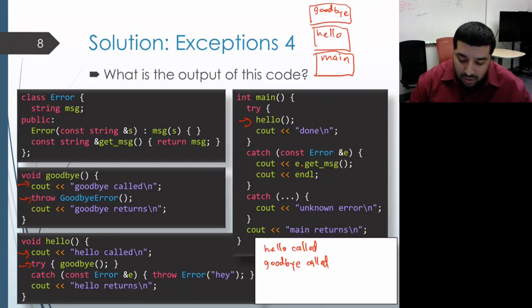So first it checks the current scope to see are we within a try block, and we're not within goodbye. So then it checks the next scope, and it checks are we within a try block inside of hello. And in fact, we are within a try block. So it's going to look at the catch blocks to see if any of them can handle a goodbye error.